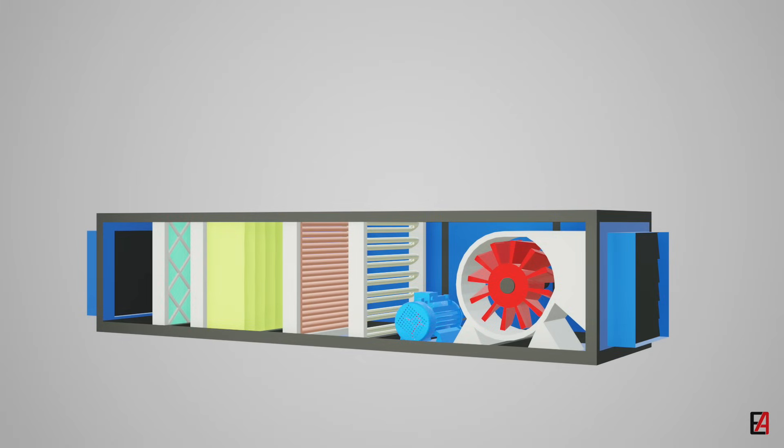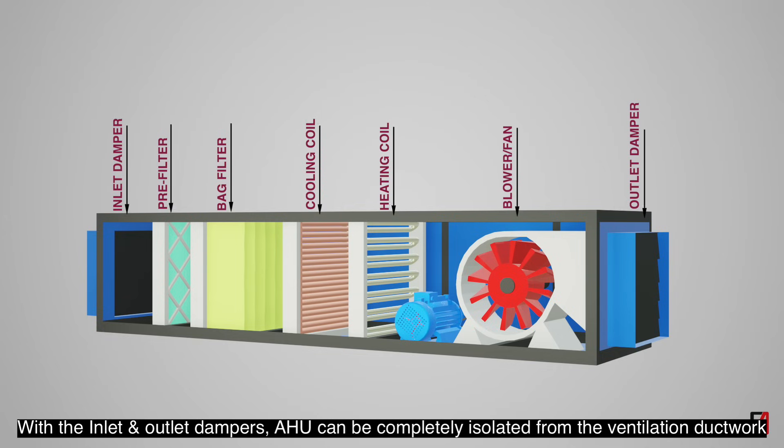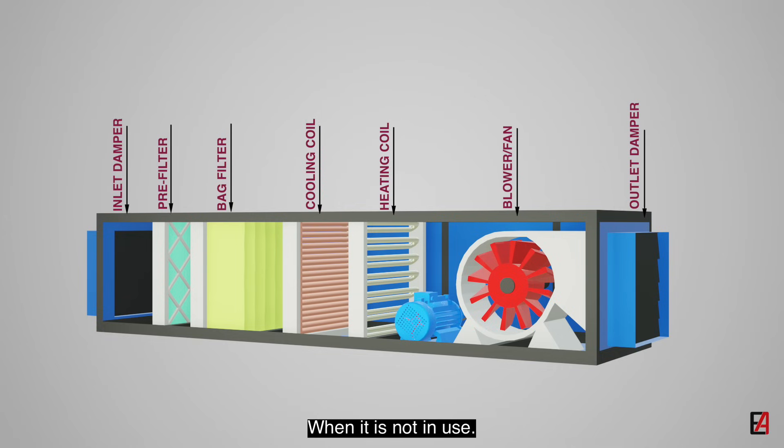The next component is the outlet dampers. This is similar to the inlet dampers. With the inlet and outlet dampers, AHU can be completely isolated from the ventilation ductwork when it is not in use.